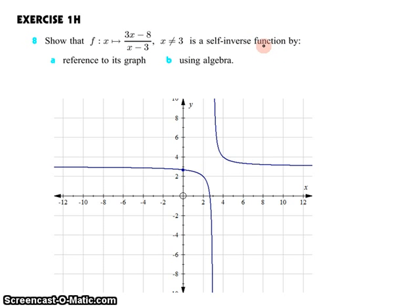To be a self-inverse function means that it is its own inverse. If you take the inverse of it, you get it back. We're asked to show this by (a) looking at a graph and (b) using algebra.